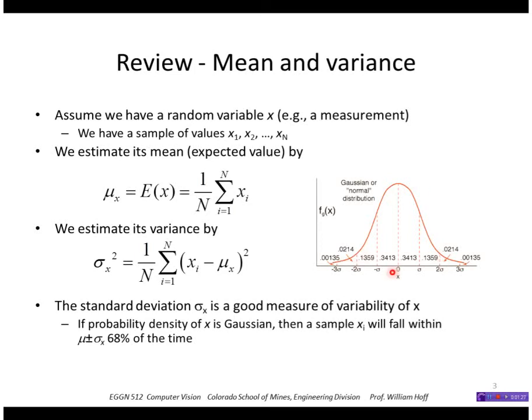We would expect that the probability that a new value of x would lie between minus sigma and plus sigma would be about 68%.